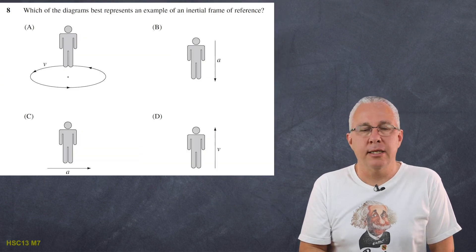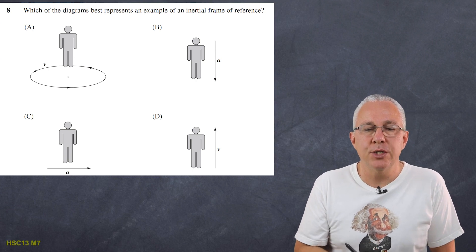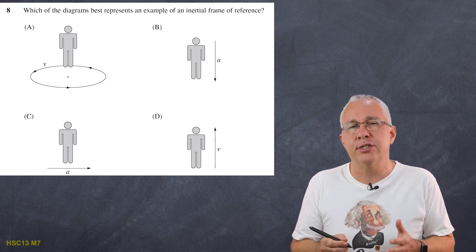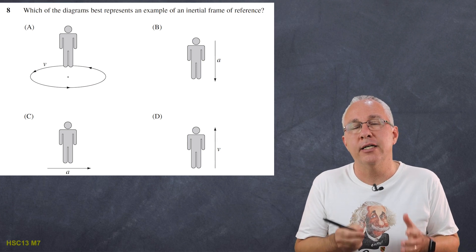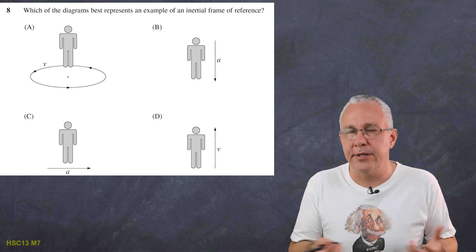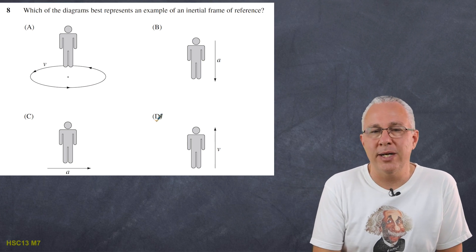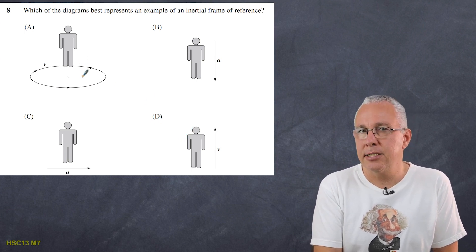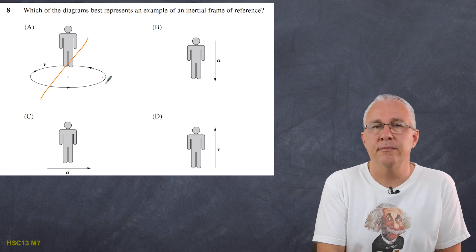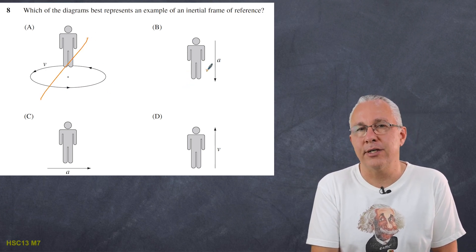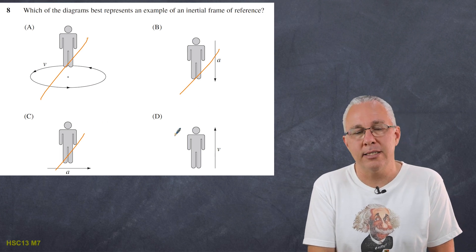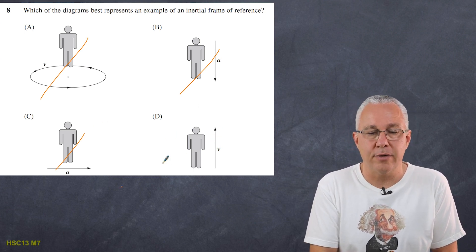Question 8: four diagrams are shown — which is an example of an inertial frame of reference? An inertial frame of reference moves at constant velocity; within it you cannot detect movement because all laws of physics remain invariant. A involves turning, so there is centripetal acceleration — out. B has downward acceleration — out. C has acceleration across the page — out. Only D has constant velocity, making it an inertial frame of reference.